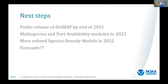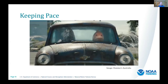The DISMAP application is currently in internal beta and we expect a public release by the end of the year. We'll also add new modules for multi-species analysis and portability, and more refined species density models. In the future, we'll not only want to look back at species distributions but also project where they might go in the future. Fish are on the move, and we've got to keep pace. With the DISMAP application powered by Esri technology, we can help people understand where the fish are going — whether you're a fish consumer, a fishery scientist or manager, or someone who relies on fishing for livelihood and cultural practices.